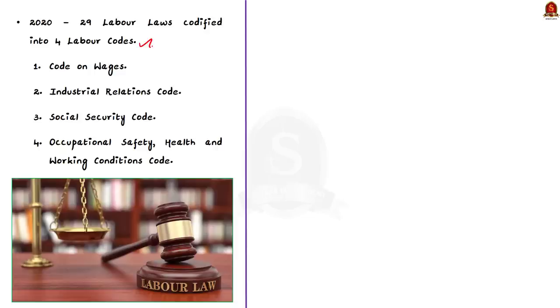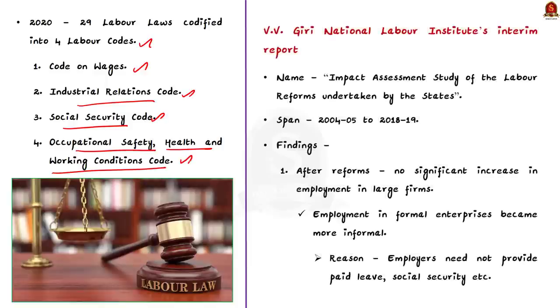Finally, the government repealed all the non-useful labor laws and they codified most important 29 labor laws into 4 labor codes. These codes include Code on Wages, Industrial Relations Code, Social Security Code, Occupational Safety, Health and Working Conditions Code. All these codes came into force in the year 2020. Since labor is a concurrent subject, it also encouraged states to implement the changes.